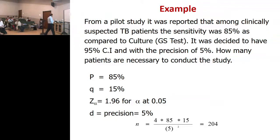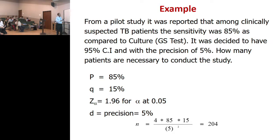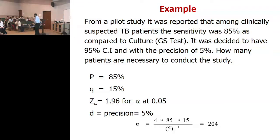Usually, in the absence of any guidelines, you decide how precisely you want to study the problem. For 80% sensitivity, how precise do you want to be? Could it be 70% to 90%, or could it be 75% to 85%? How precisely do you want to study this?